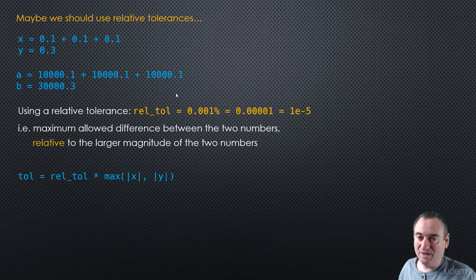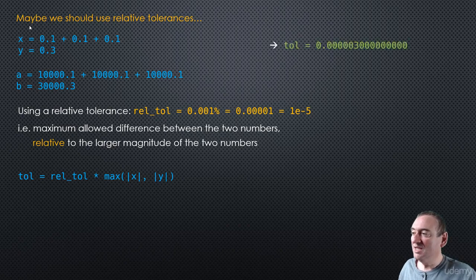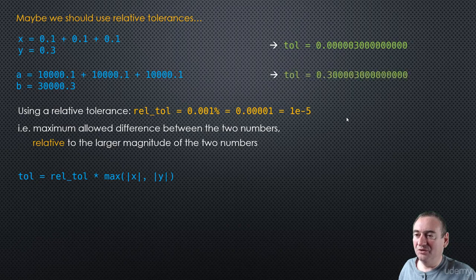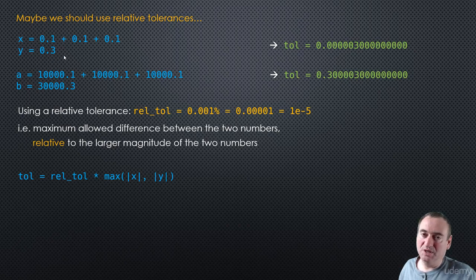So we're going to calculate an absolute tolerance which is going to be our relative tolerance times the maximum magnitude — we only care about the magnitude of the numbers for the tolerance. So in this case the tolerance would be 0.000003. And in the second example our tolerance would be much bigger: 0.30000003. So notice that the tolerance we would use as an absolute tolerance is smaller for small numbers and bigger for large numbers — and that makes sense, because to be within 0.001% of a large number means we can be a little bit more off.